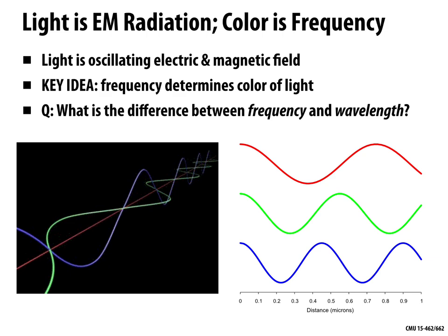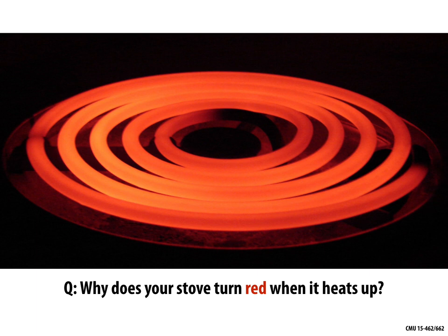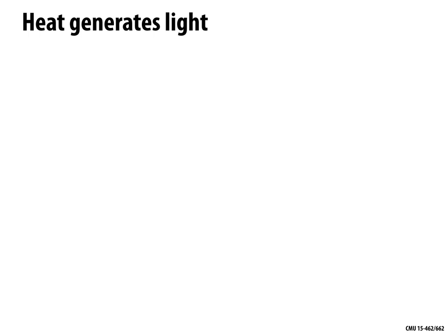Using this physical picture, we can start to understand questions about color — like why does your stove turn red when it heats up? If you have an old-fashioned induction burner, you switch it on, it starts out black, and as it gradually heats up you'll see a dull red glow, then a brighter red, then orange, and if you've really heated it up, maybe a yellow color. We've all experienced this, but why does it happen? The basic reason is that heat generates light.